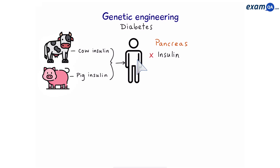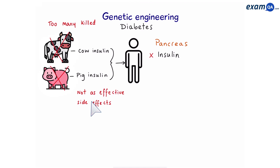The problem with using animal insulin for a human being is that it's not going to be as effective. Secondly, insulin from one species to another species might also produce some unwanted side effects. In addition, if we want to treat the whole world, that means we're going to have to be killing a lot of animals.